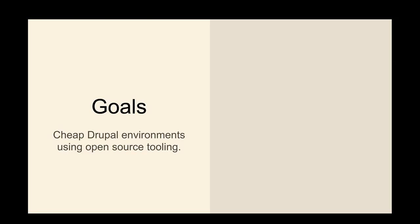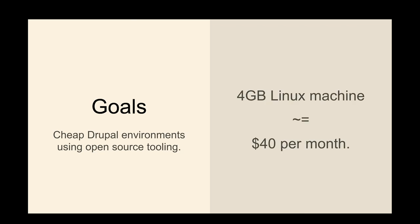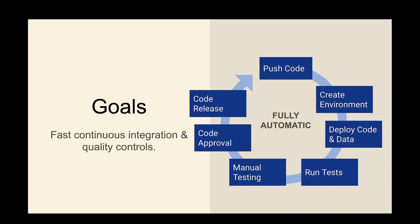Goals: cheap, fast environments. Preferred with open source stuff so we can put it anywhere — that's the only way it's going to be cheap. It's a service that will cost money and will charge per unit. Probably four gigs for forty bucks or less a month.